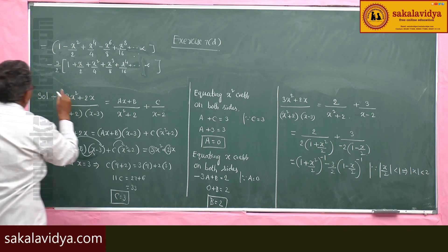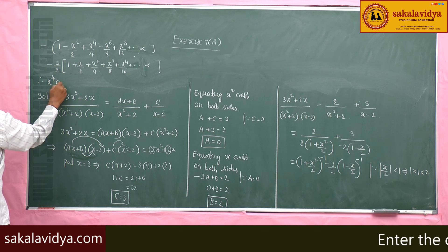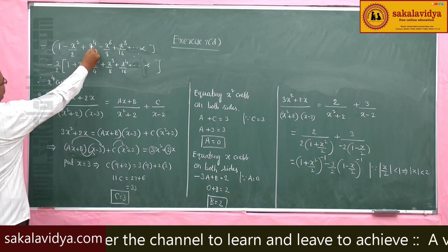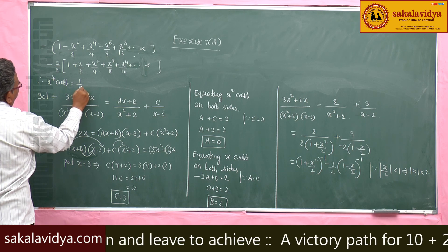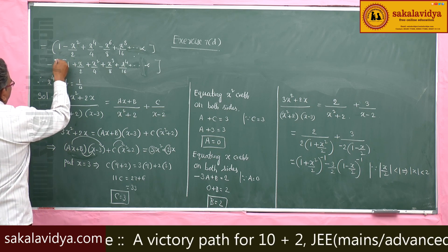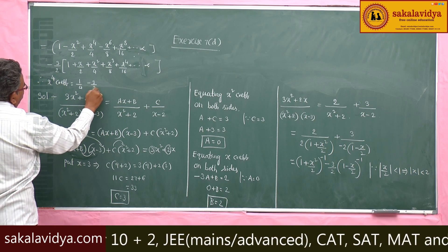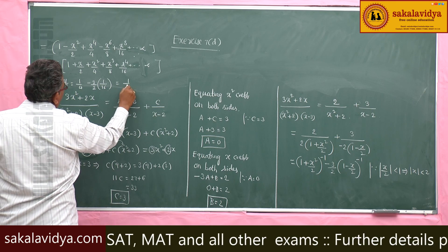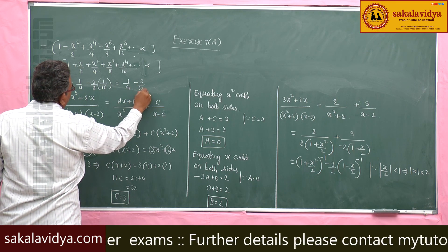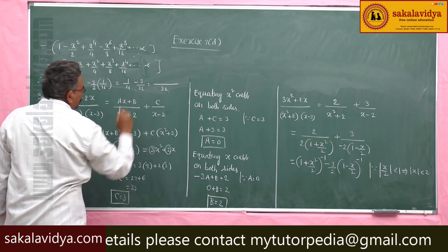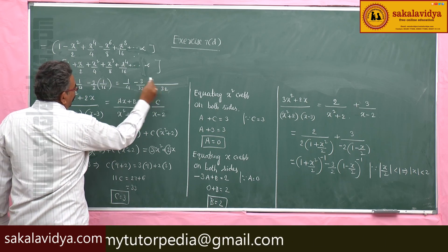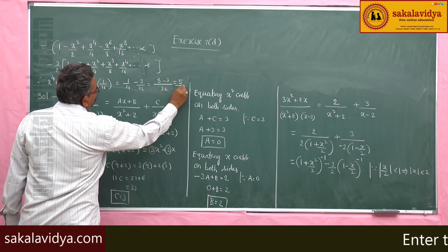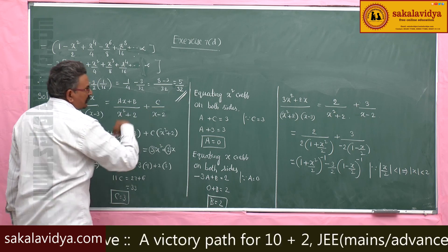Therefore, the x⁴ coefficient: from the first series it is 1/4, and from the second series it is 1/16, multiplied by −3/2 giving −3/32. So the x⁴ coefficient = 1/4 − 3/32. The LCM is 32, giving 8/32 − 3/32 = 5/32. This is the final answer.